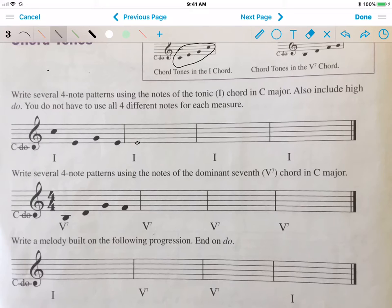Here in this measure, I'm going to use MI MI SO MI. Next measure: DO, SO, DO, SO, MI, SO, MI, DO, DO, and there.